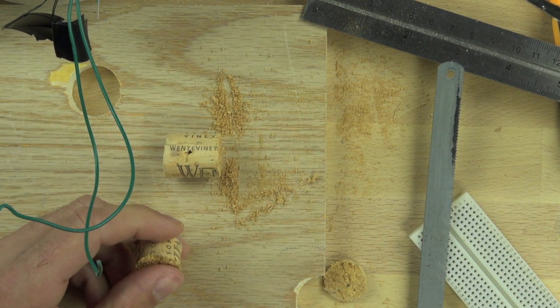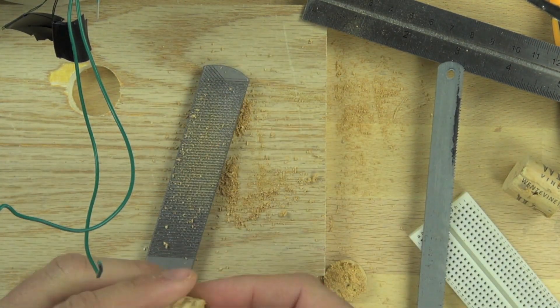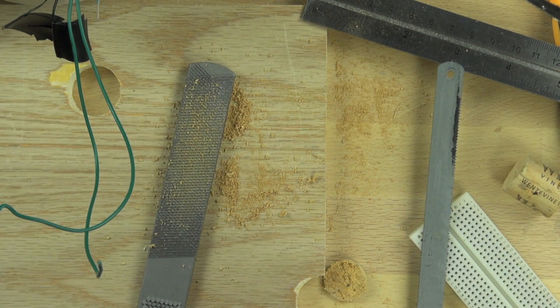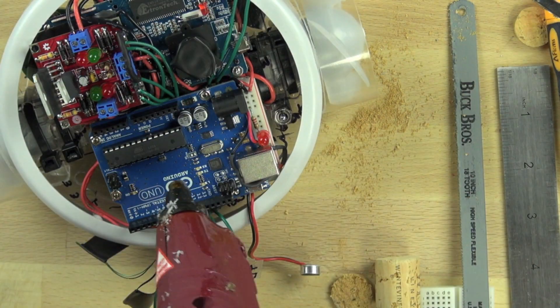Then we're going to take the cork and file it down to get it nice and smooth. The file will let us take off just a little bit at a time so we can get it the exact right height.